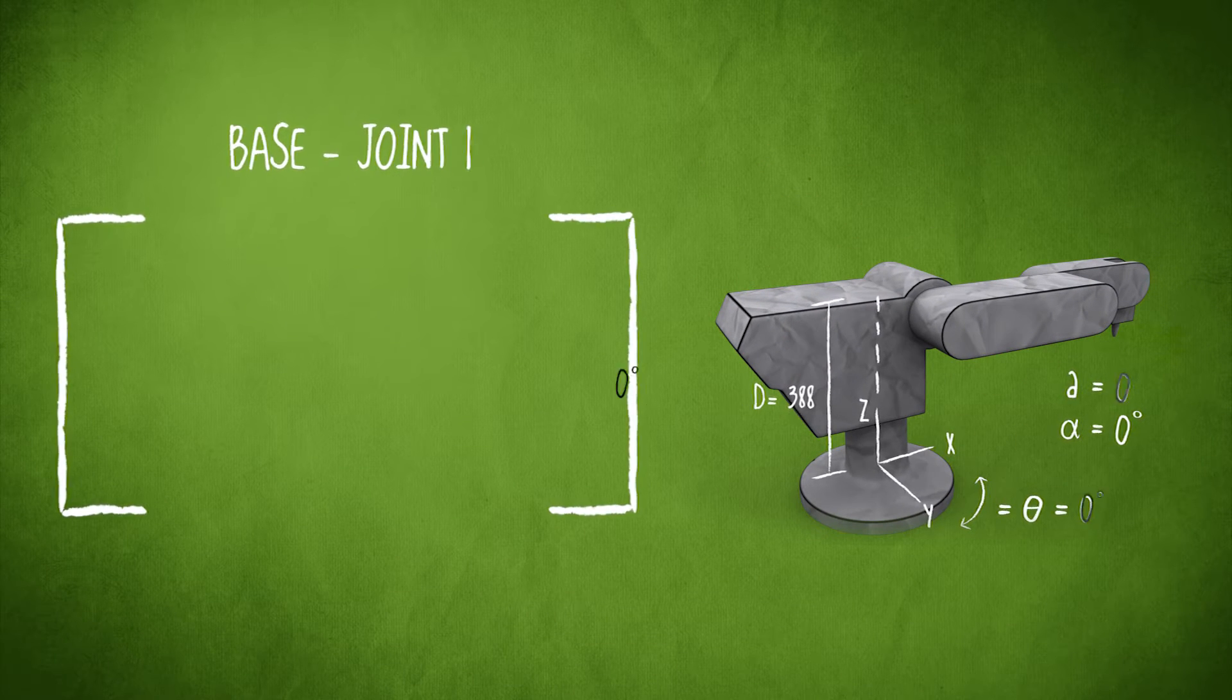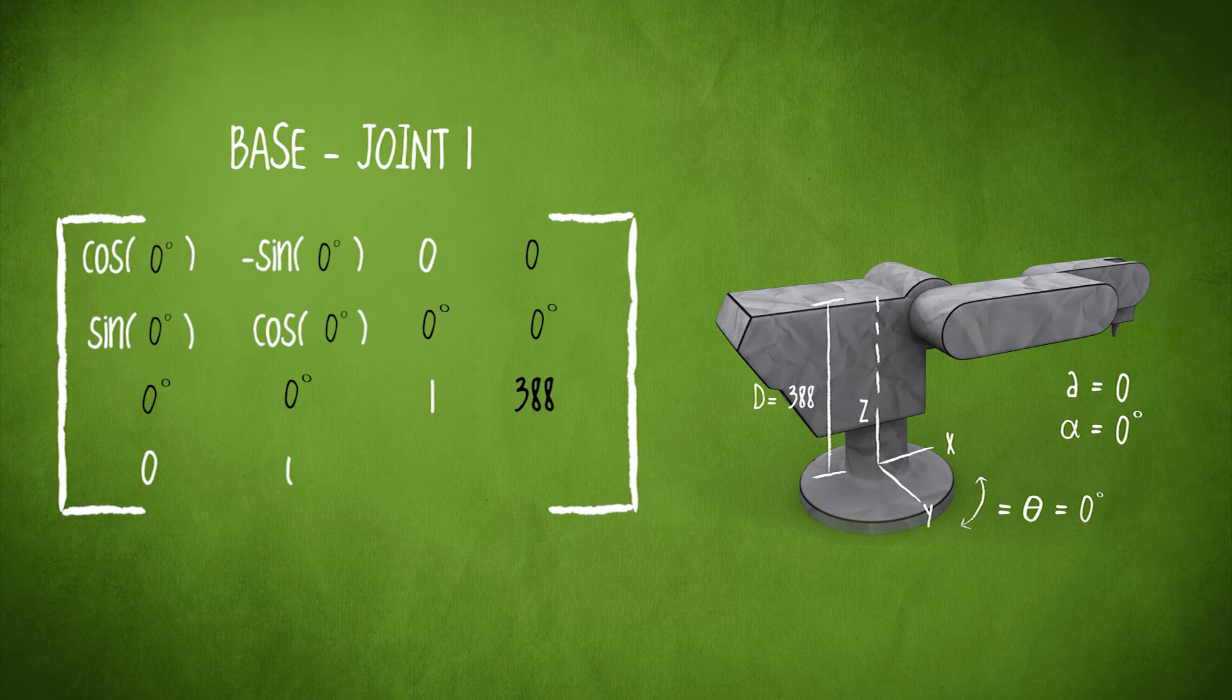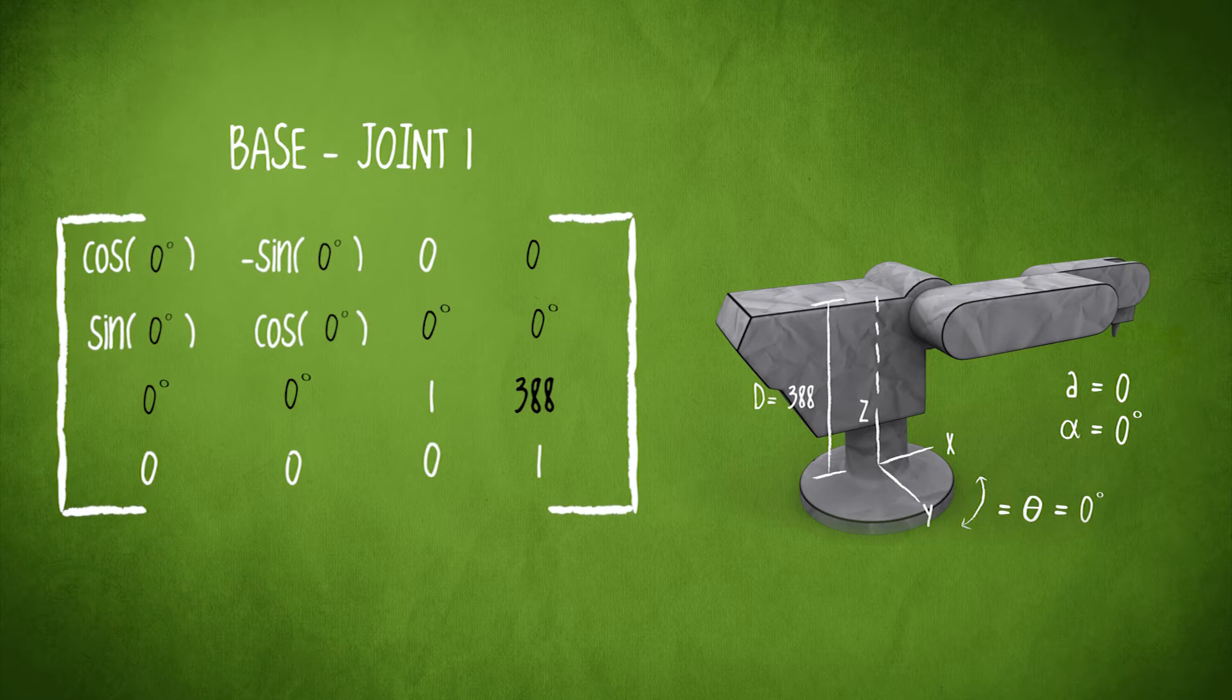At this stage, these values from the base to joint 1 can be substituted into a modified Denavit-Hartenberg matrix, or DH matrix for short.